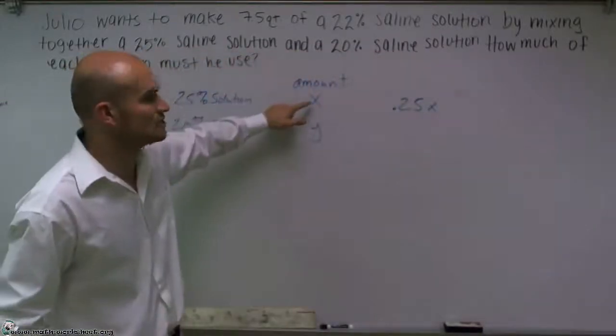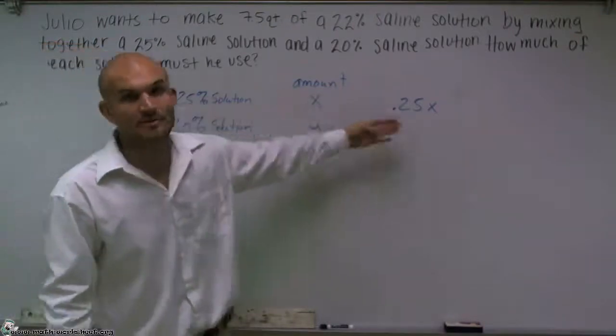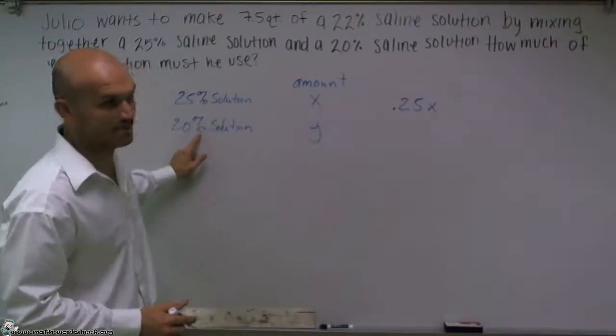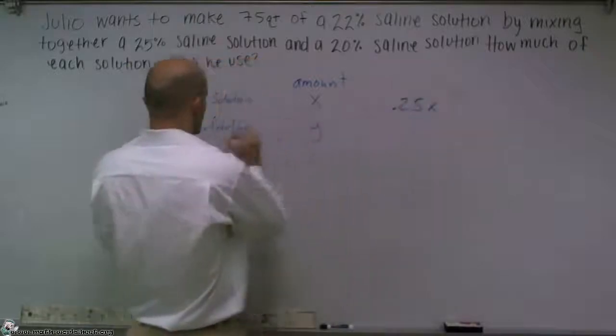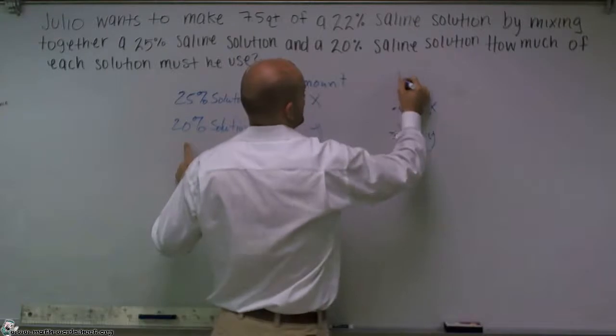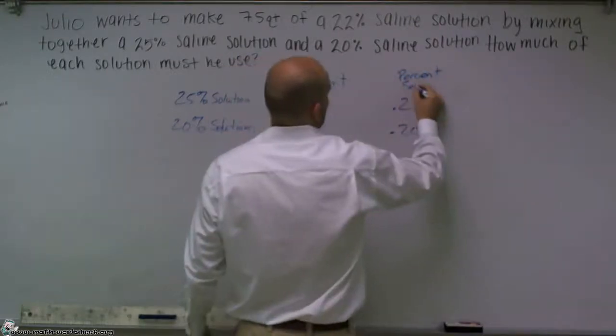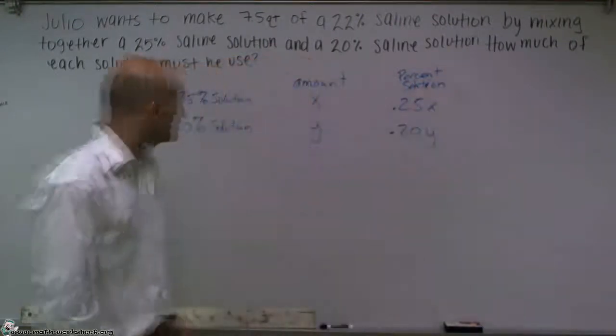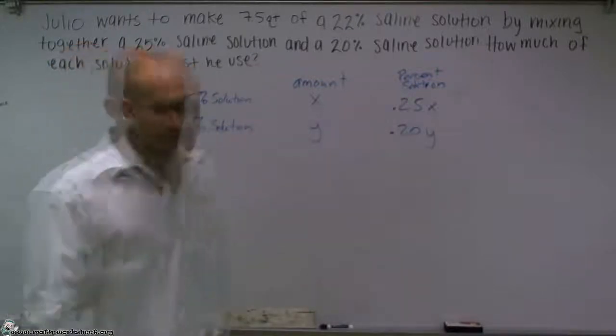Because depending on how much solution I have, I'm going to multiply that by the percentage to know what is my percent of the solution in my amount. And then this one was 20% of my solution. So the percentage of solution is just going to be 0.20 times y.